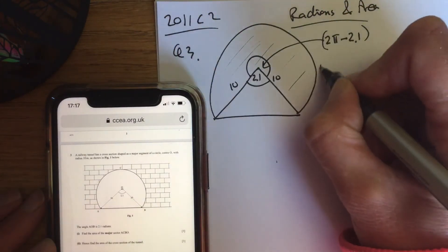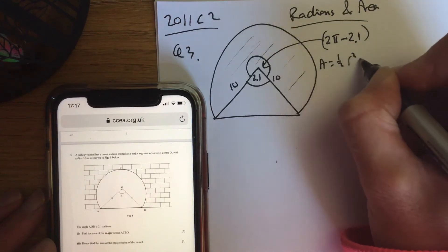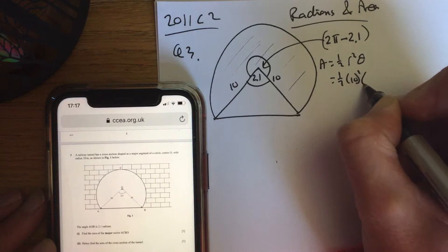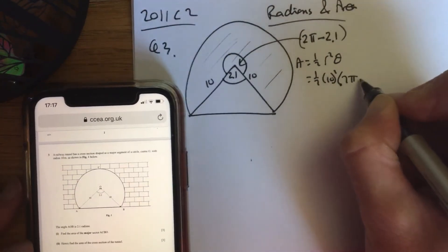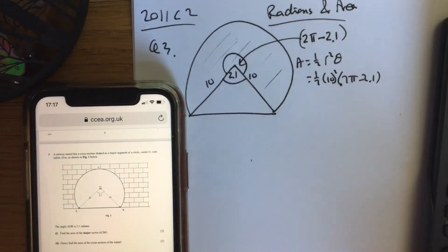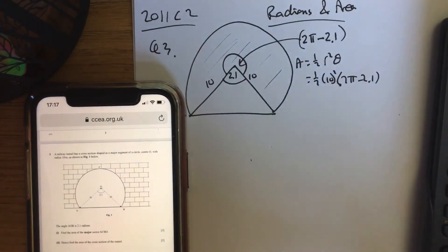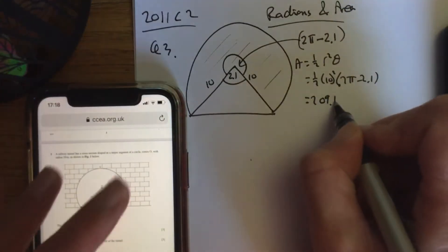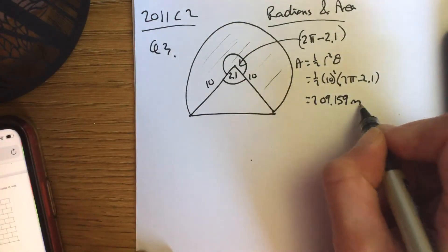This area of the sector, half r squared theta. So it's a half, radius is 10 squared, and your theta is 2π minus 2.1. So just plugging that into the calculator. 2π minus 2.1 times it by 100 divided by 2, giving you an answer of 209.159 metres.